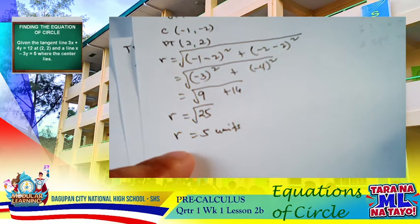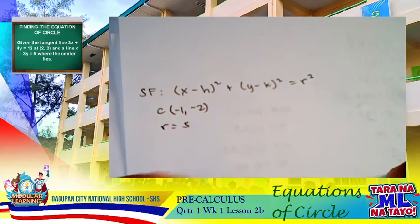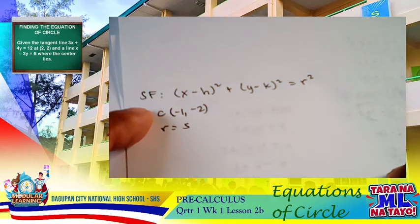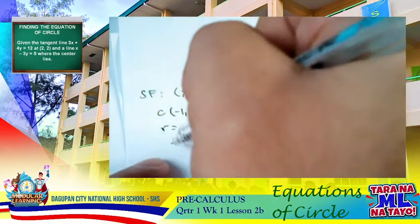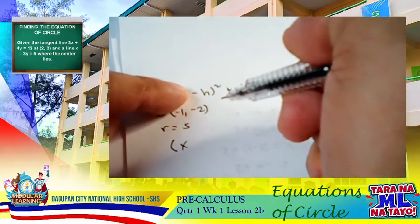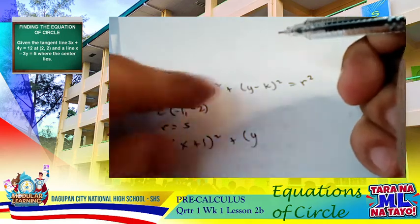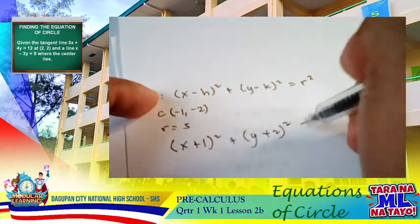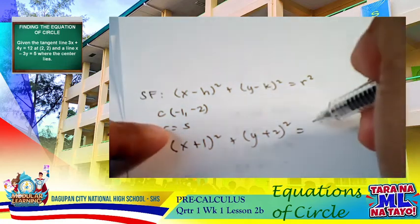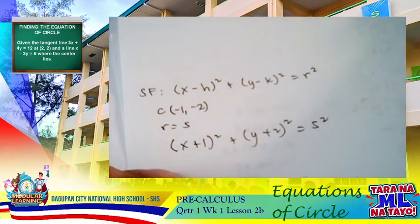For the last step, we substitute into the standard form of a circle centered at (h, k). With center (negative 1, negative 2) and radius 5, substituting h equals negative 1 and k equals negative 2 gives us (x plus 1) squared plus (y plus 2) squared equals 25.